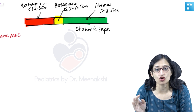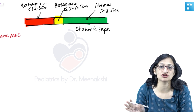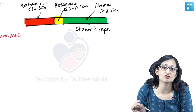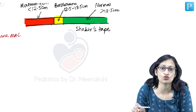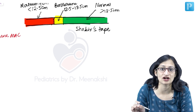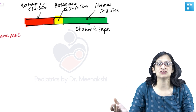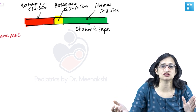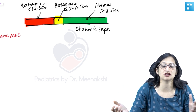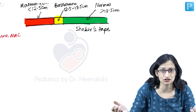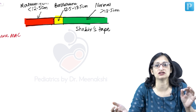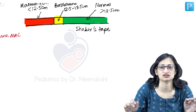Irrespective of the cutoff used, what is important to remember is: if the mid-arm circumference falls in the red zone, the child has malnutrition and we need to take action quickly. The yellow zone indicates borderline nutritional status and you need to look into the factors and rectify them immediately so the child does not land up in malnutrition. The green zone indicates normal nutritional status.